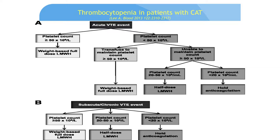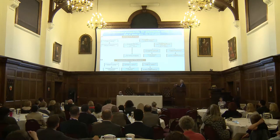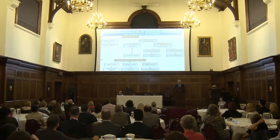Agnes Lee's 2013 schema essentially says the same: if the platelet count is greater than 50, give full weight-based dose of low molecular weight heparin. If less than 50, transfuse to get the platelet count above 50, then give full dose. If unable to get it above 50 but able to get it between 20 and 50, give half dose. Less than 20, withhold anticoagulation. This applies to both acute VTE events and subacute or chronic VTE events.